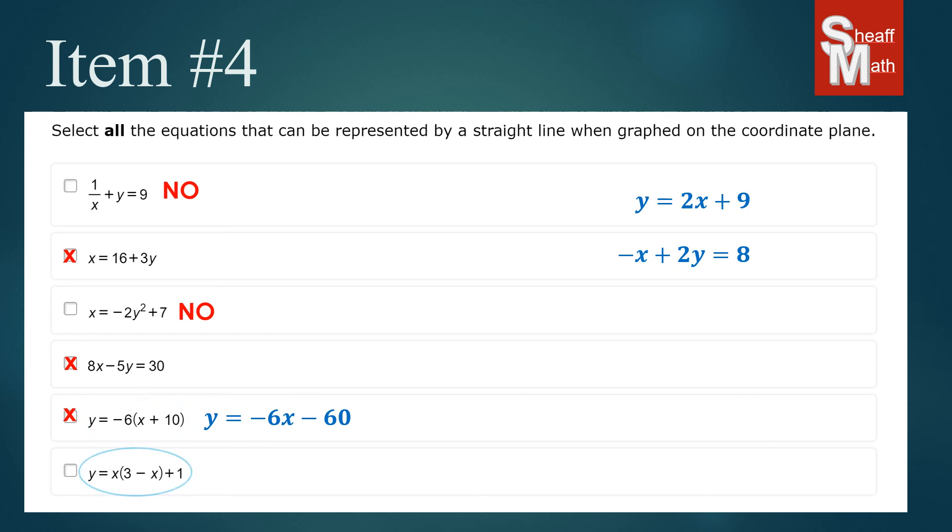And then when we look at the bottom number and we distribute that x to both of those, here's what we get: y equals 3x minus x squared. And so one of the rules is you cannot have an x squared. So that is a no as well.